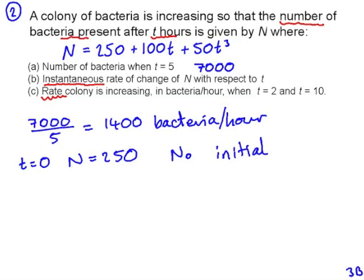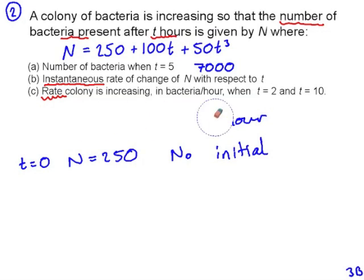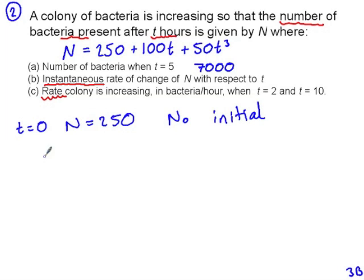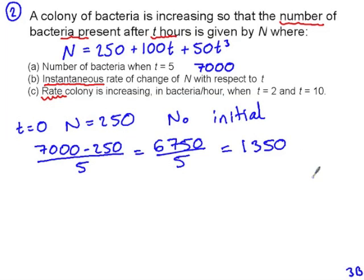So in actual fact, to work out the average rate of change of bacteria over the first 5 hours, we need to say, well, the number of bacteria increased from 250 to 7,000 in a space of 5 hours. So 1,350 bacteria per hour. Now that's the average rate of change over the first 5 hours.